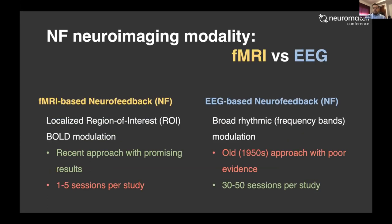These differences lead to different characteristics in the neurofeedback methods used. In fMRI-based neurofeedback, we usually define localized regions of interest and modulate the BOLD signal on that region. In EEG neurofeedback, we use broader rhythmic modulations where participants modulate frequency bands of the signal. The fMRI-based approach is much more recent — about one to two decades — while EEG-based neurofeedback has 50 to 70 years of literature.